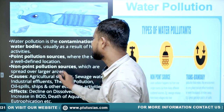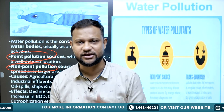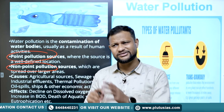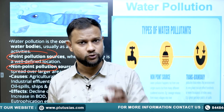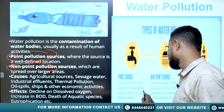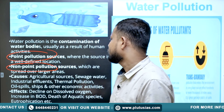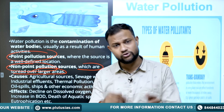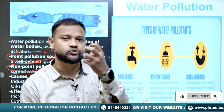Water pollution has two sources: point source or non-point source. Point source means that pollutants are being laid directly into the water — industries come under this, for example the Kanpur leather industry. Non-point sources are spread over a larger area, leading to multiple channels through which pollutants enter water. Agriculture is a non-point-based source, along with sewage water, industrial effluent, thermal pollution, oil spill, and ships.